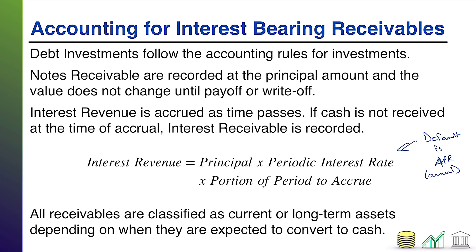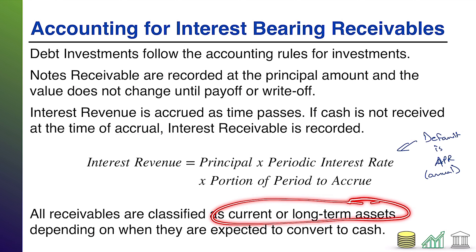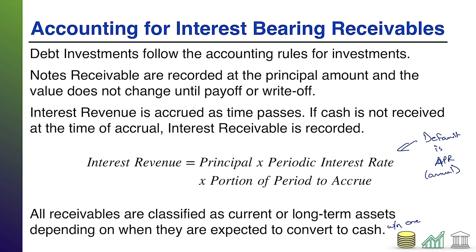Of course, revenue is a credit; the other side is either cash if someone's paying you, or interest receivable if you'll get it later. For balance sheet purposes, all receivables are classified as current or long-term assets depending on when they'll convert to cash. A five-year note is a long-term asset until the final year, when it becomes a current asset. For interest receivable, whether it's current or long-term depends on when the interest gets paid — within the next year means current.